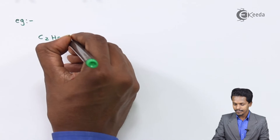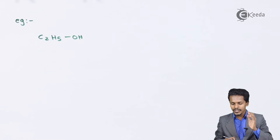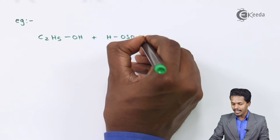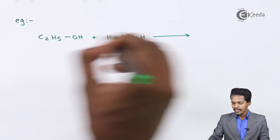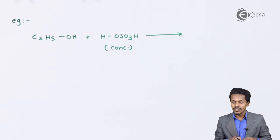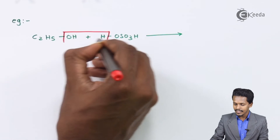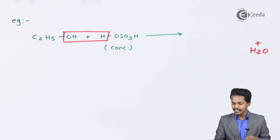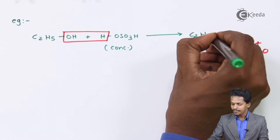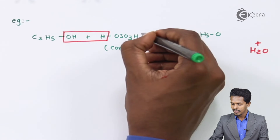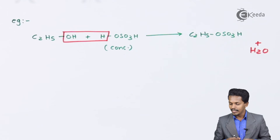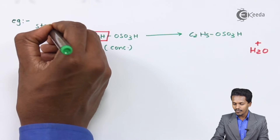Taking the example of ethanol, C₂H₅OH: in Step 1, C₂H₅OH is treated with concentrated sulfuric acid (HOSO₃H). The H and OH are removed as water, and the main product of Step 1 is C₂H₅OSO₃H, that is ethyl hydrogen sulfate.